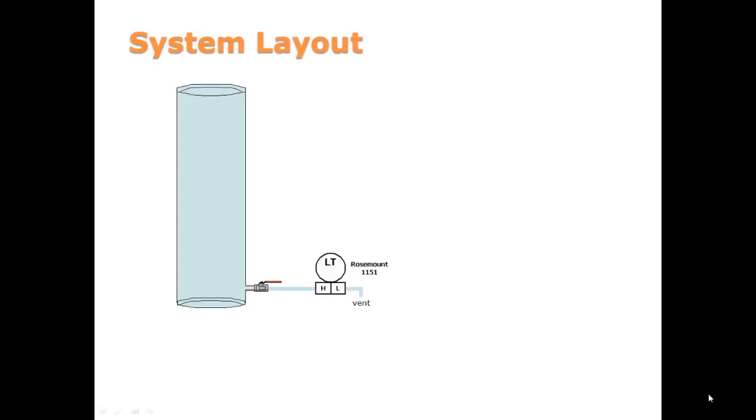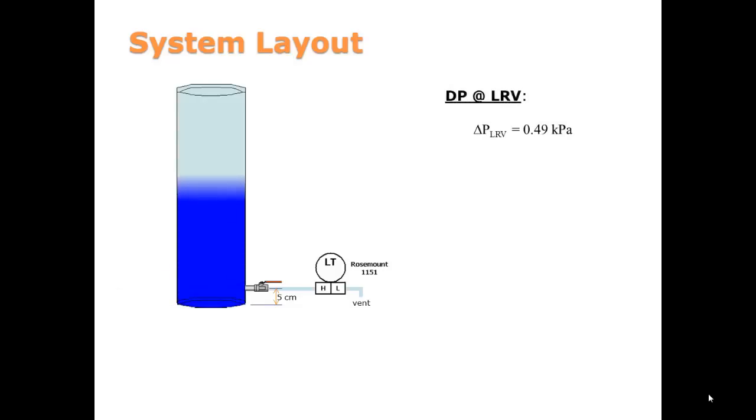The level transmitter is to be calibrated with a lower range value, or LRV, at 10 centimeter water level, which is approximately 0.49 kPa differential pressure on the level transmitter. The upper range value for the transmitter will be 90 centimeters from the bottom of the tank, resulting in a differential pressure of 8.34 kPa on the transmitter. The transmitter will be calibrated using this differential pressure range.